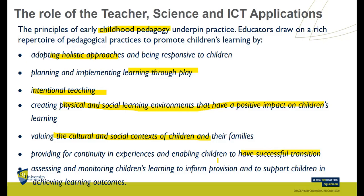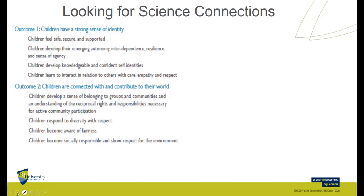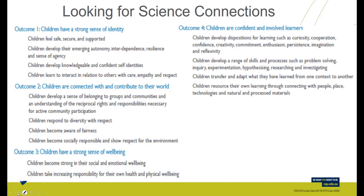It's about the teacher assessing and monitoring children's learning and how to achieve the five learning outcomes. You're not going to do all of these — in the ACS we don't approach all learning outcomes in one hit. You can see in outcome number one: children have a strong sense of identity. Outcome two: they're connected with and contribute to their world. Outcome three: a strong sense of wellbeing, including social wellbeing and taking responsibility for health.